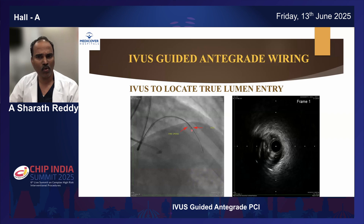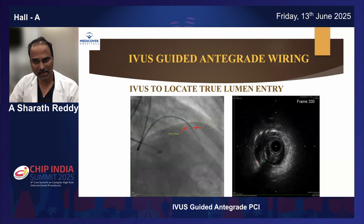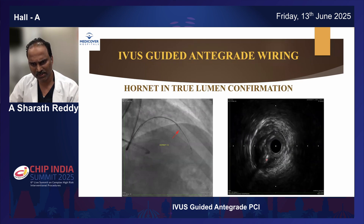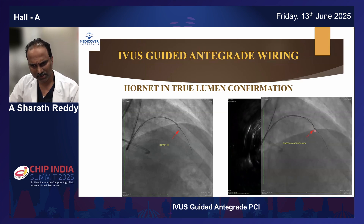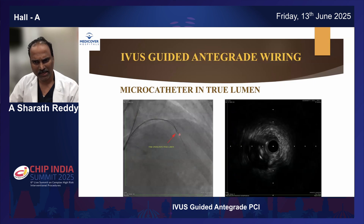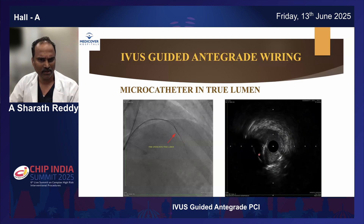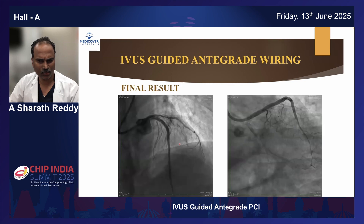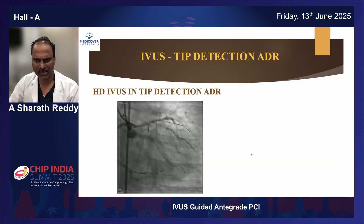By doing image-guided wiring, we can avoid retrogrades in such scenarios. What we did: took IUS - you can see this is IUS and this is a Hornet wire - and we identified the true lumen at six to eight o'clock position. Then with tip detection, we advanced the wire and now the wire is in true lumen. This is a Hornet wire. Once Hornet is inside, advance the micro catheter into the true lumen, then deescalate your wire - that's important. We deescalated wire to Fielder, but it didn't progress, so I had to escalate to Gaia 3 and finish the procedure. You can see it's quite nice and all the side branches are intact.